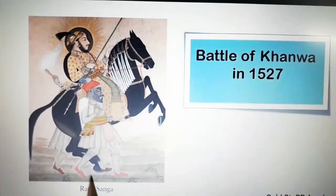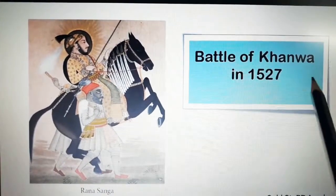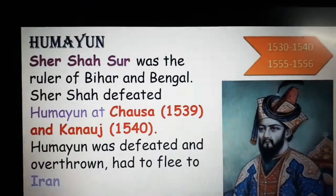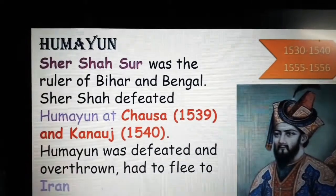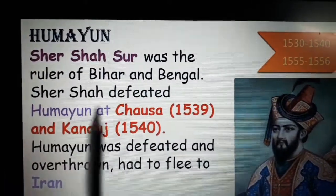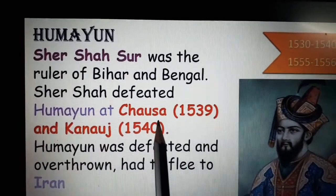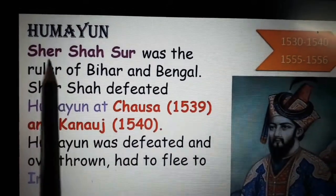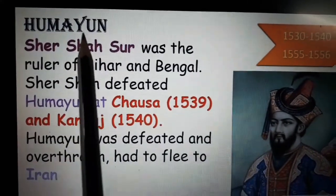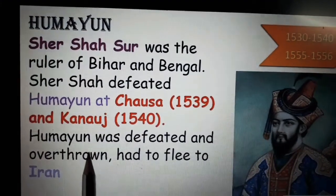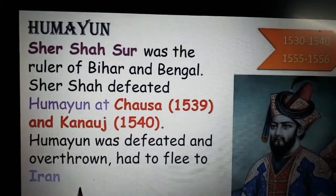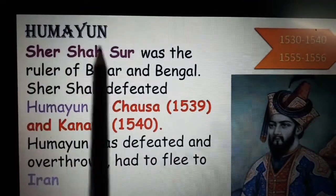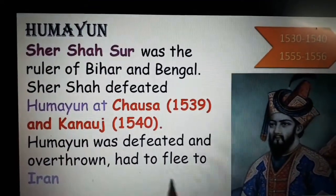Here is a picture of Rana Sangha, whom Babar defeated at the Battle of Kanwa in 1527. Our next ruler is Humayun. Sher Shah Sur was the ruler of Bihar and Bengal. Sher Shah defeated Humayun at Chausa in 1539 and Kannauj in 1540, winning both battles. Humayun was defeated and overthrown and had to flee to Iran.